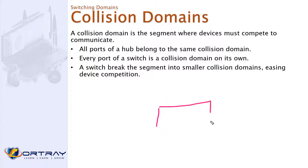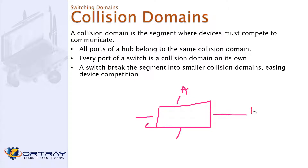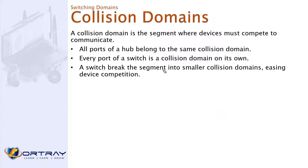For example, if one switch has four ports — A, B, and C — and you have PC-A, PC-B, and PC-C connected to them: if PC-A and PC-B are already talking to each other, then PC-C has to wait. That is called a collision domain.